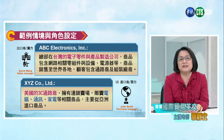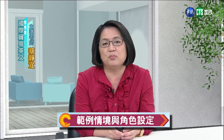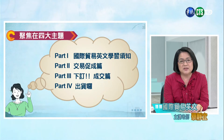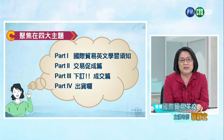ABC這個出口商臺灣公司的窗口是Sales Manager業務經理，叫做David Wang。美國買方XYZ的窗口是Purchase Manager採購經理，叫做John Smith。往後我們會看到的信件就是由這兩位一來一往互相溝通，以這樣的情境來發展不同的國貿信函。